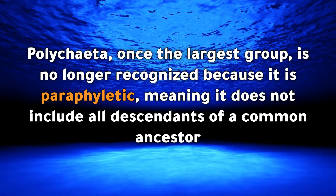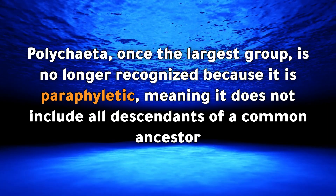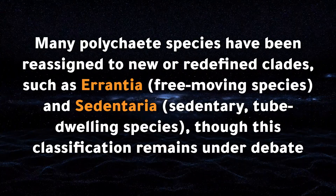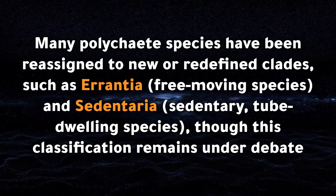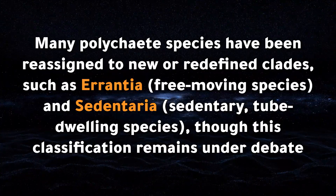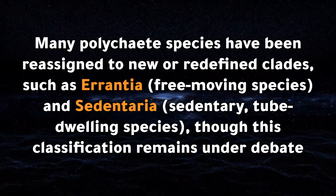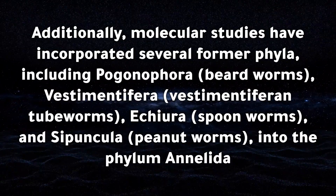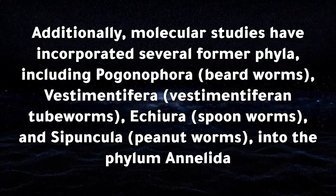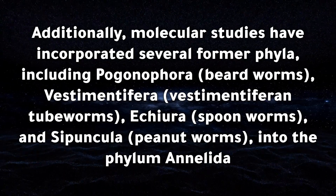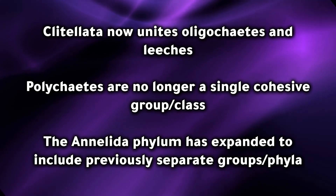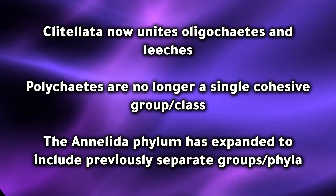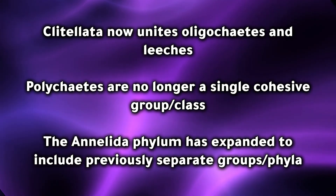Polychaeta is no longer recognized as a valid group because it is paraphyletic, meaning it does not include all descendants of a common ancestor. Many polychaete species have been reassigned to new or redefined clades such as Errantia (free-moving species) and Sedentaria (sedentary tube-dwelling species), though this classification remains under debate. Additionally, molecular studies have incorporated several former phyla — including Pogonophora (beardworms), Vestimentifera (vestimentiferan tubeworms), Echiura (spoonworms), and Sipuncula (peanut worms) — into the phylum Annelida. In summary, Clitellata now unites oligochaetes and leeches, polychaetes are no longer a single cohesive class, and the phylum Annelida has expanded to include previously separate groups.